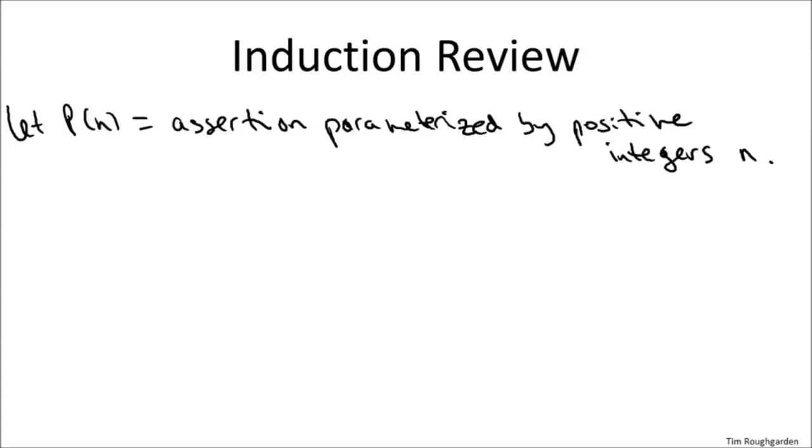So let's begin by reviewing the format for proofs by induction. The canonical type of proof by induction and the kind that we'll be using here is when you want to establish an assertion for all of the positive integers n. So now it's some assertion which is parameterized by n, where n is a positive integer.